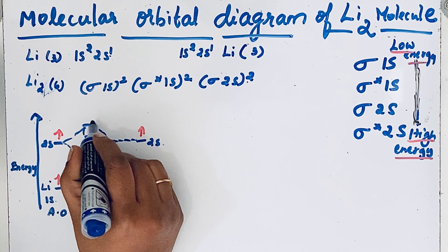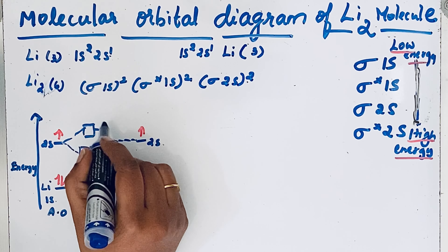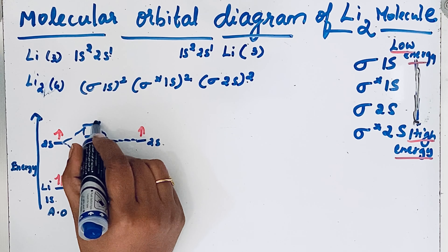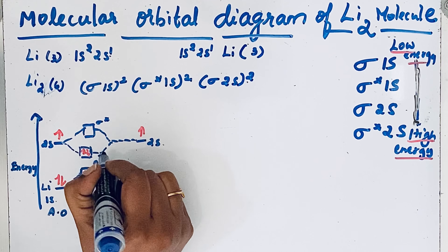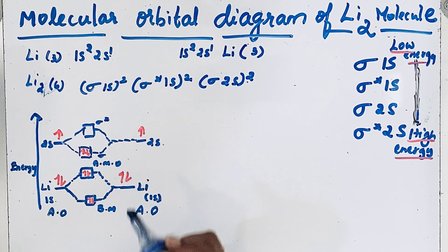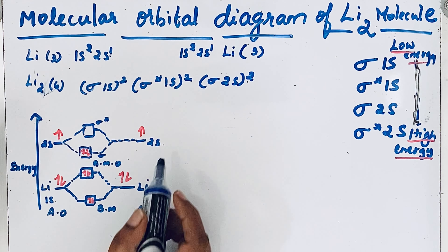This upper orbital is the antibonding or sigma* 2s molecular orbital, and this lower one is the sigma 2s or bonding molecular orbital.